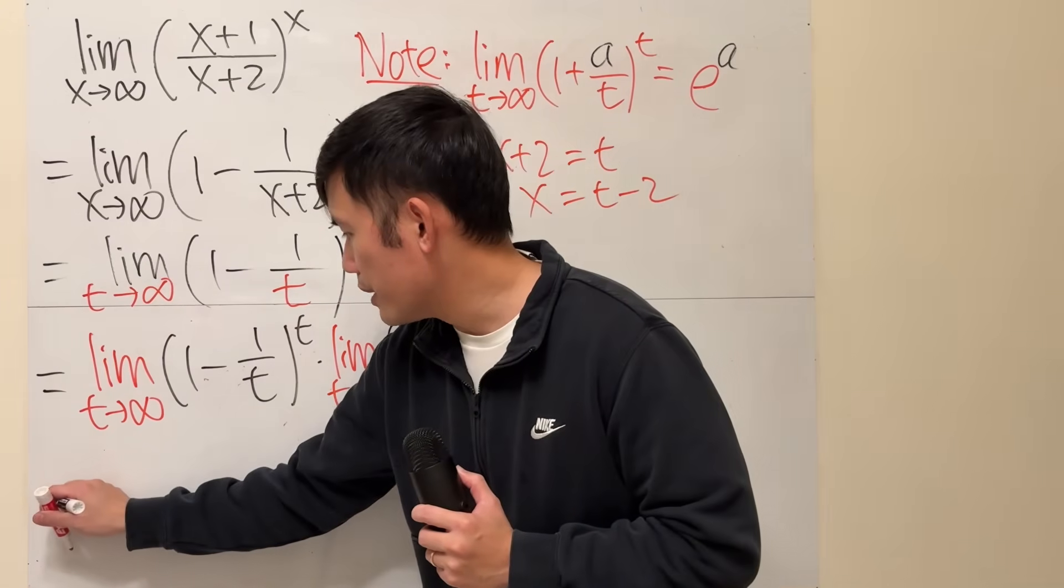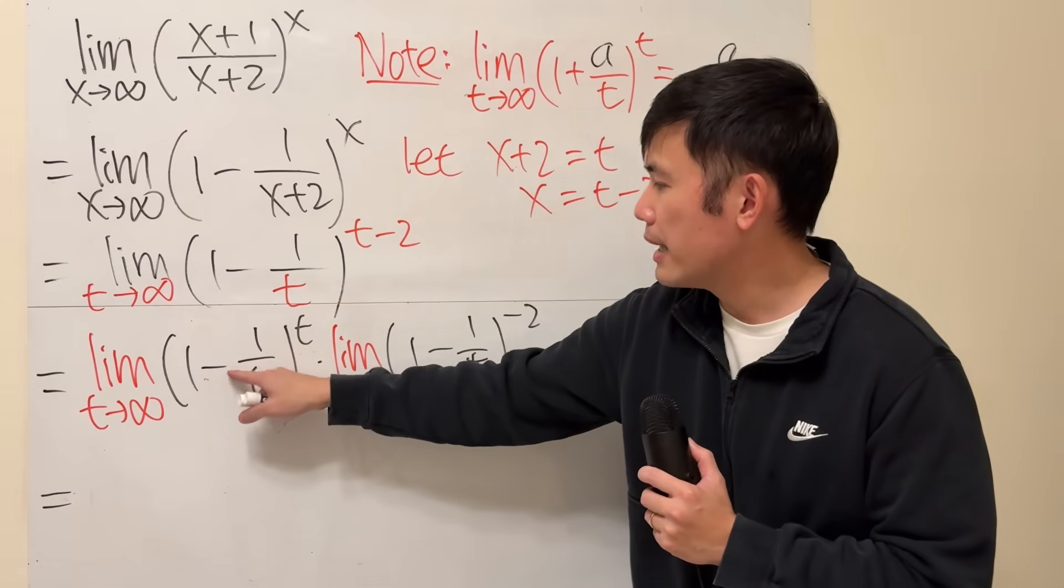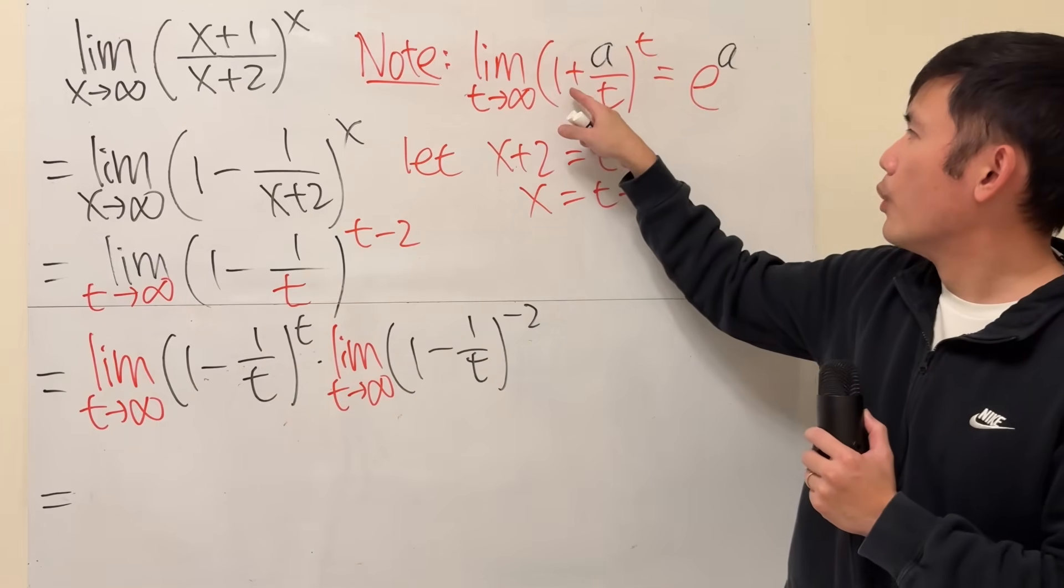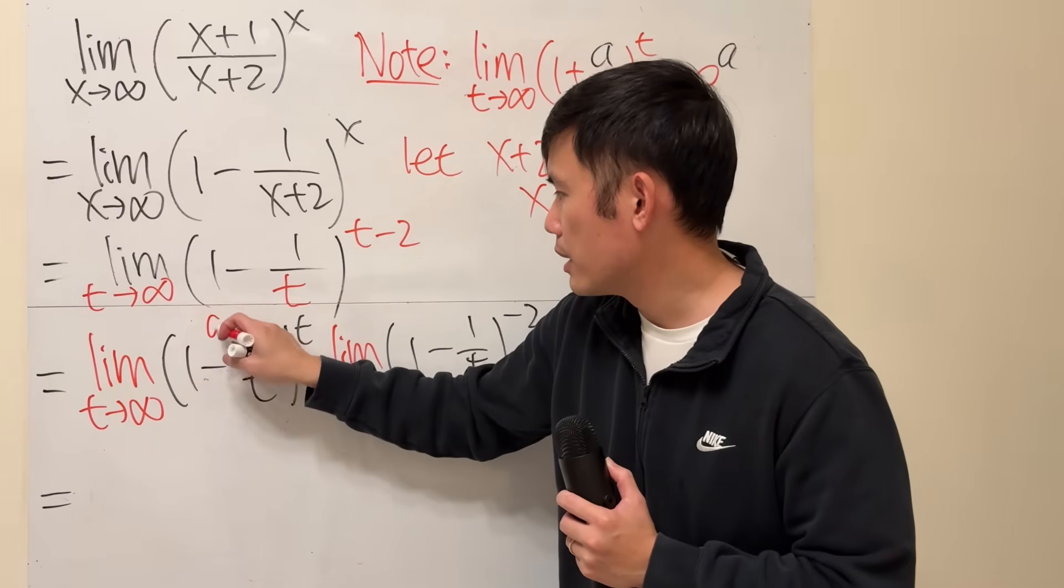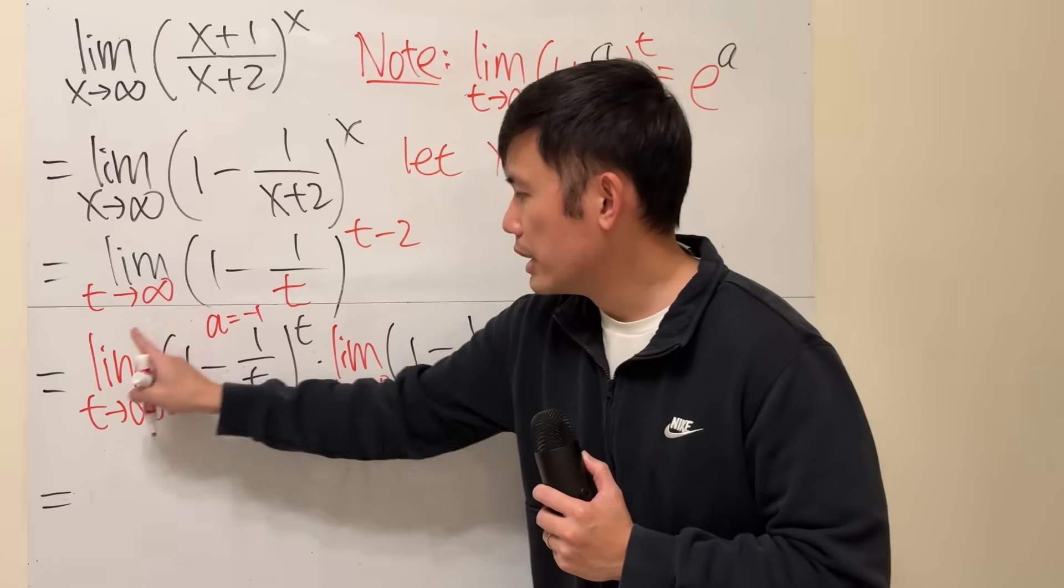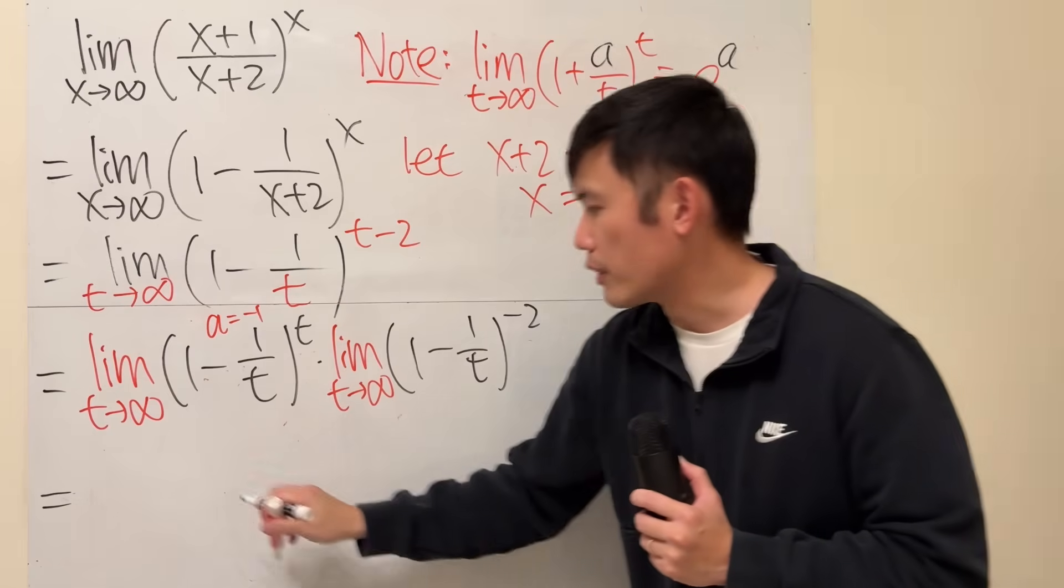Now, for this right here, notice what we said earlier, 1 minus 1 over t, 1 plus a over t, here, a is equal to negative 1. So, this limit gives you e to the negative first power.